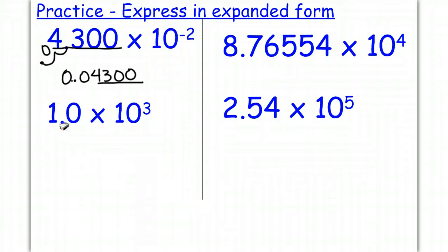Here's a positive 3, so we're going to move to the right, 1, 2, 3. Fill in with zeros, so that's basically 1,000, but notice we have 2 sig figs here to start, so I need a line over that 0 to have 2 sig figs in my final answer.